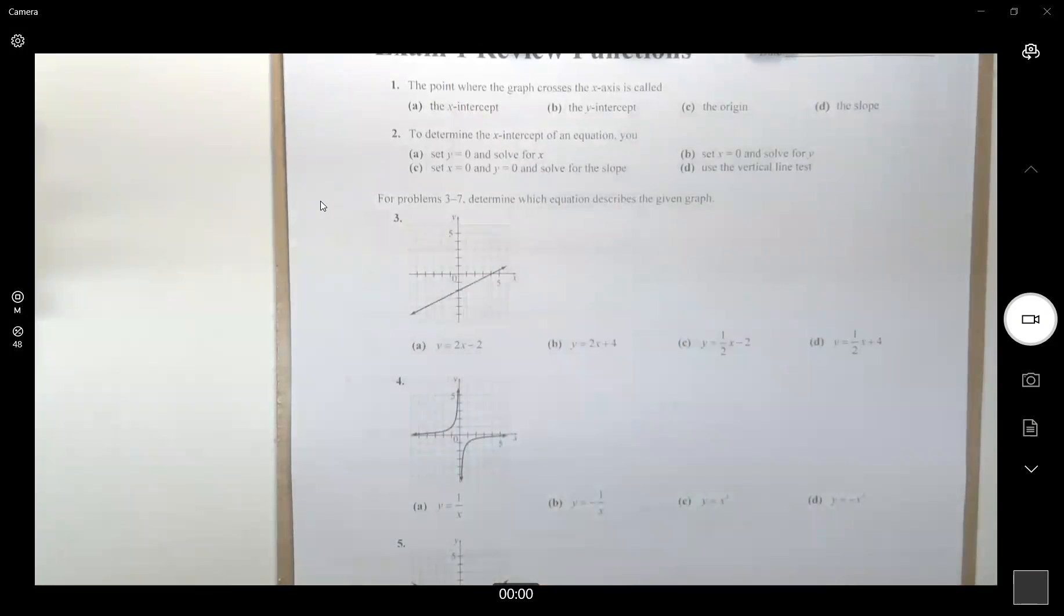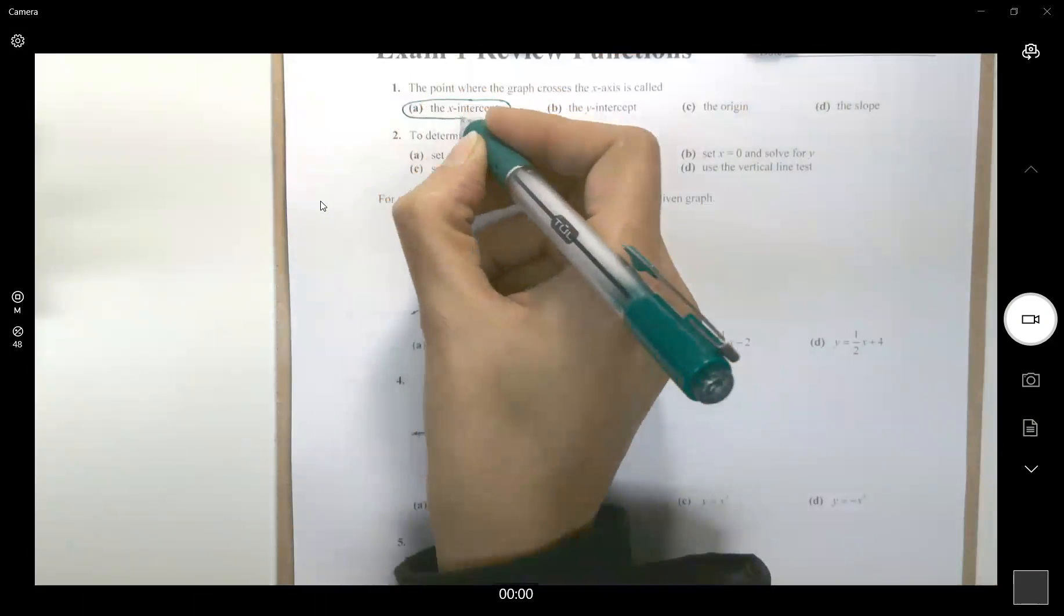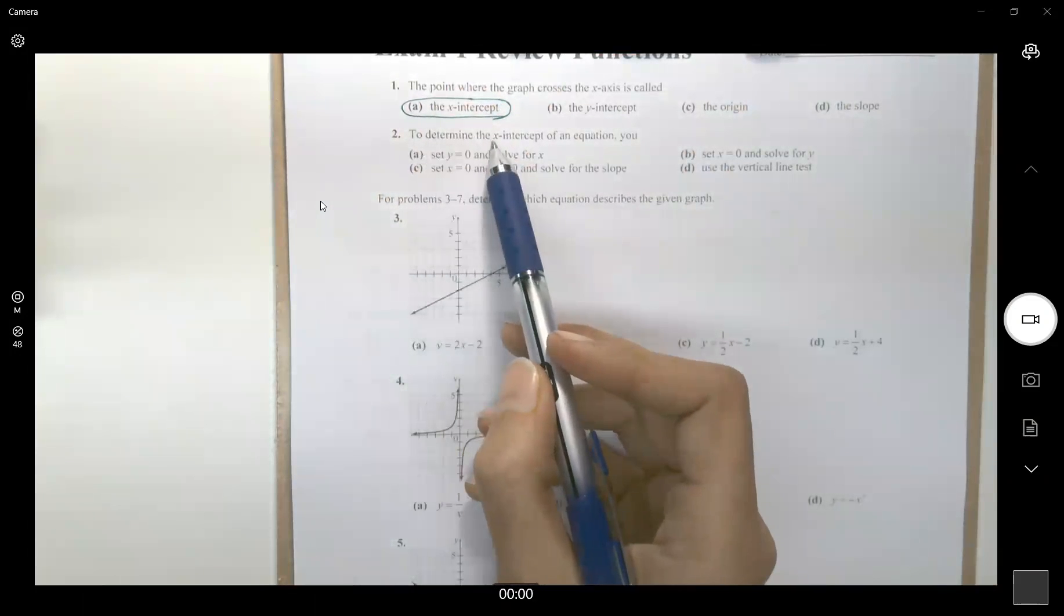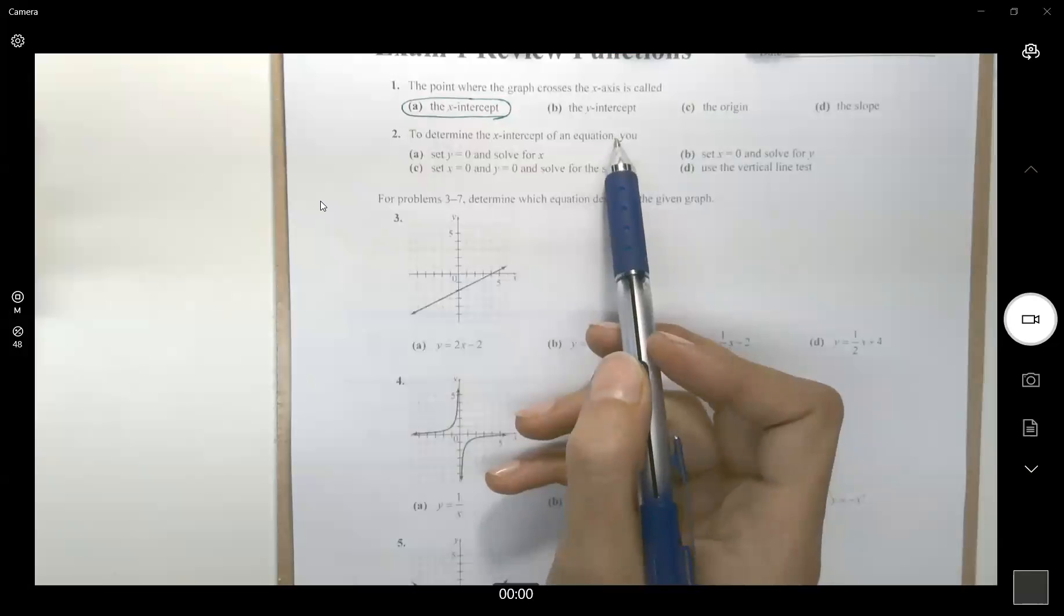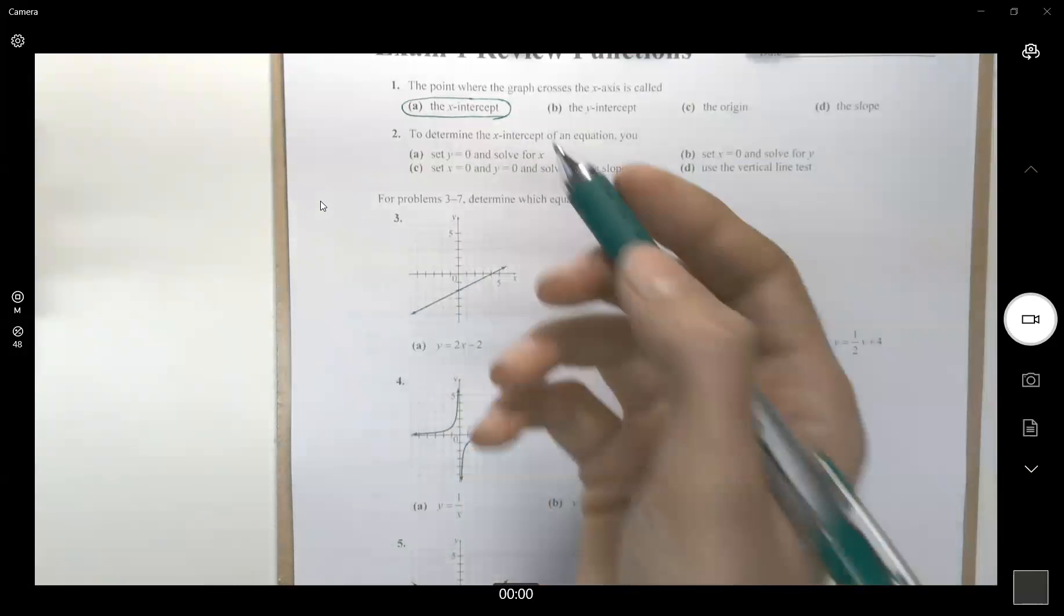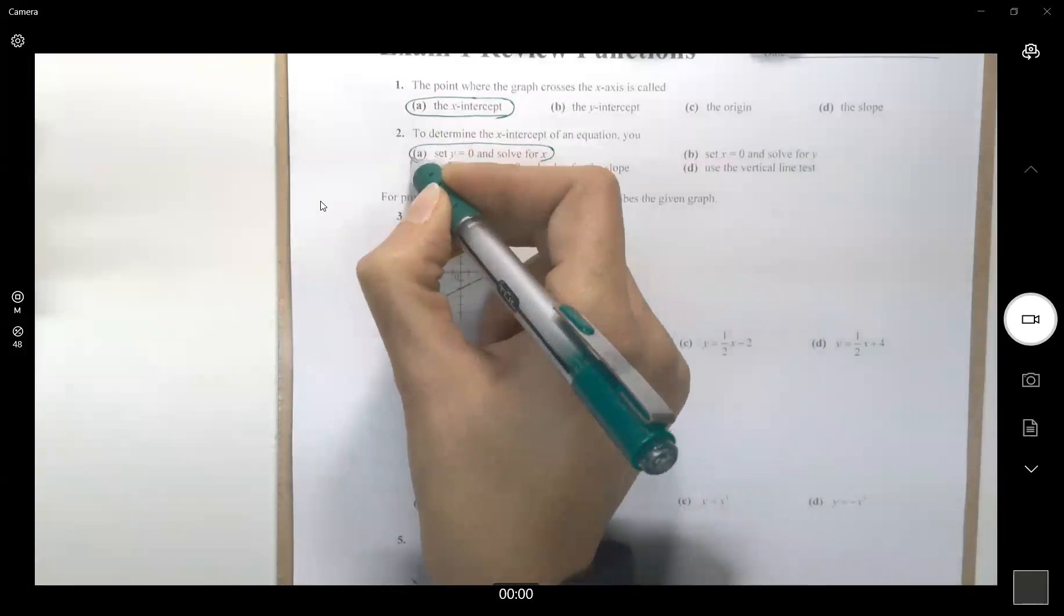you all know that it is called zeros or x-intercepts of the function or the graph. To determine the x-intercept of an equation, set y equal to 0 and solve for x. This is the process that we take.